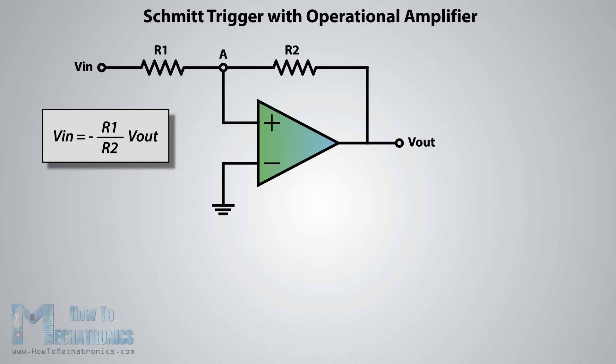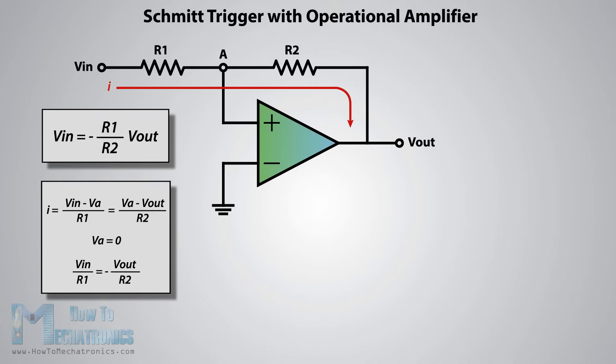We get this equation with the following relationships. The current I through this line equals VIN minus VA divided by R1, as well as VA minus VOUT divided by R2. If we replace the VA with zero as we need that value for the switch to occur, we will get the final equation.